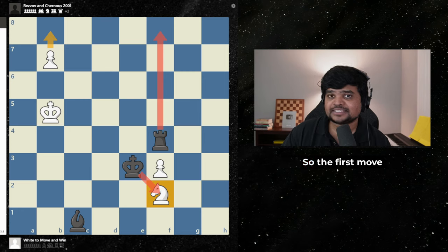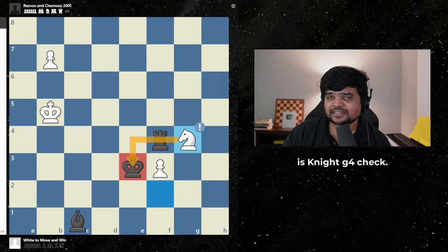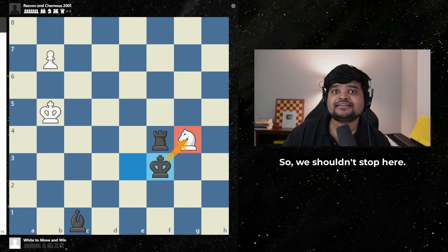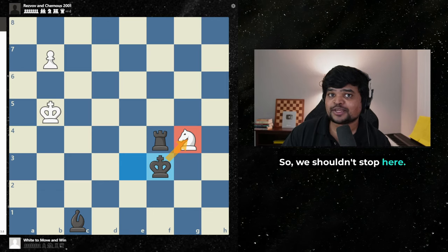You need to make checks. So the first move we should consider is knight g4 check, saving the knight temporarily. But there's a problem. Black takes our pawn and attacks our knight again. So we shouldn't stop here.